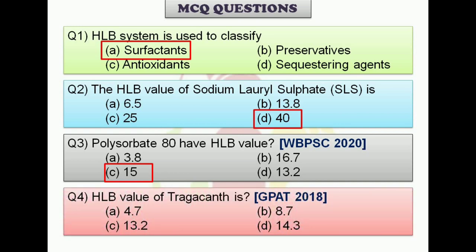Question 4: The HLB value of tragacanth — this question appeared in GPAT 2018. Option A: 4.7, option B: 8.7, option C: 13.2, option D: 14.3. Try to answer the question. The correct answer is option C: 13.2.